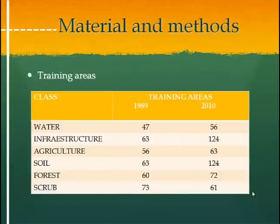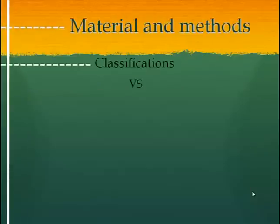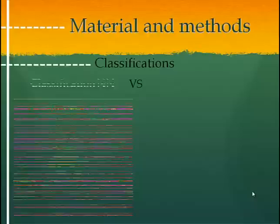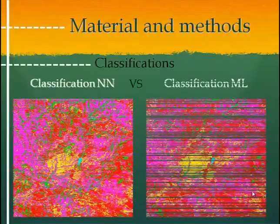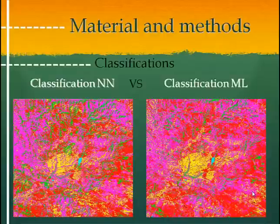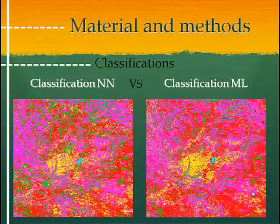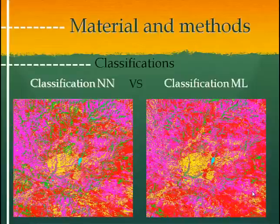Classification. At first, we chose two classification algorithms: neural network and maximum likelihood. This classification was calculated based on the feature space, which consists of all Landsat bands and, in addition, the NDVI. For that process, the training areas were chosen according to the defined rules.